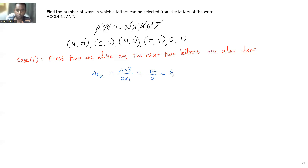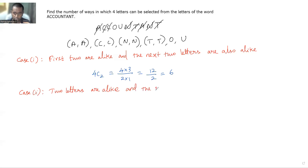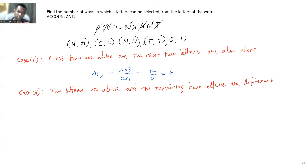So when two letters are alike and the remaining two letters are also alike, the number of ways to select four letters in this way is 6. Now let's consider Case 2: two letters are alike and the remaining two letters are different.